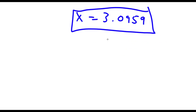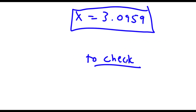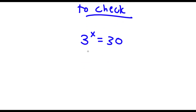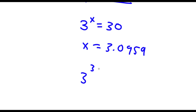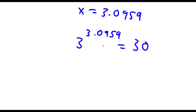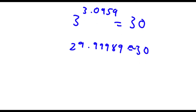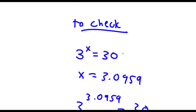So this is my answer. Now to check: my original equation was 3 to the power of x is equal to 30, and x is equal to 3.0959. So if I plug this in, I have 3 to the power of 3.0959 is equal to 30. Now 3 to the power of 3.0959 equals 29.9989, and this is approximately equal to 30. So 30 equals 30, meaning our solution is correct.